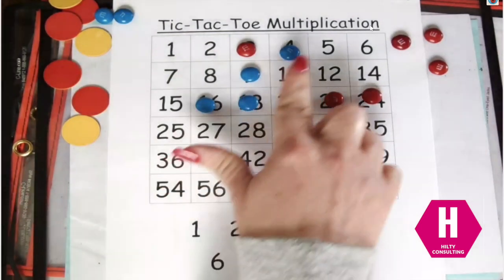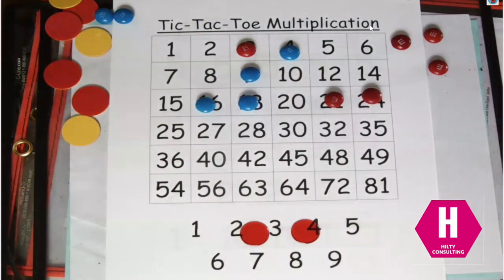But you can get three vertically, horizontally, diagonally. That's Tic-Tac-Toe Multiplication. Have fun playing and thanks for joining us.